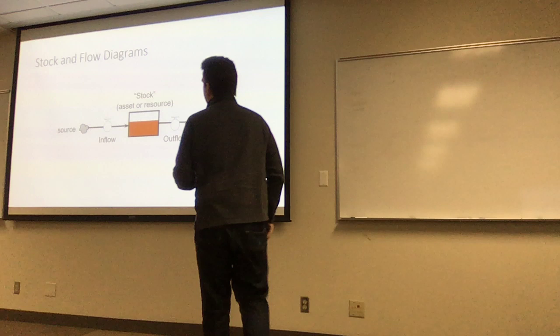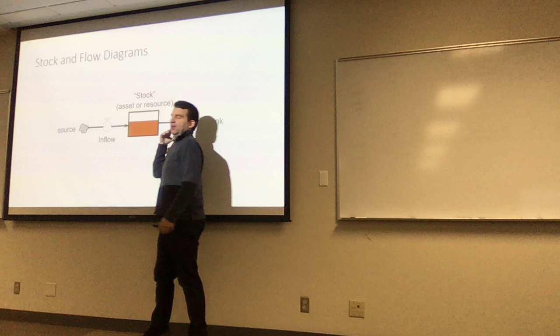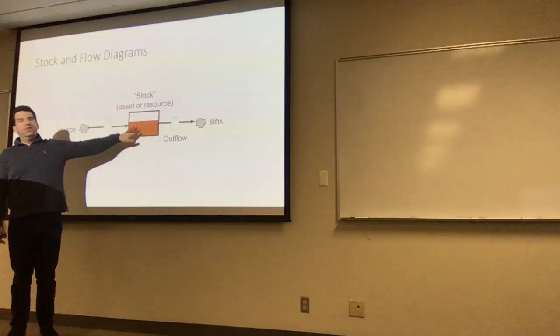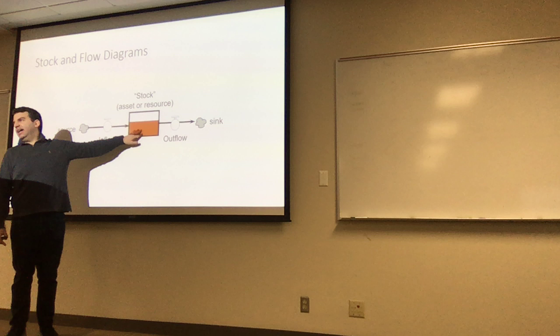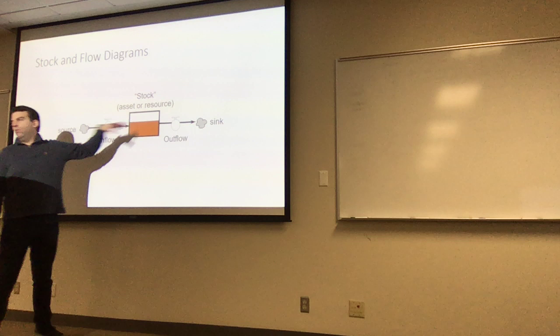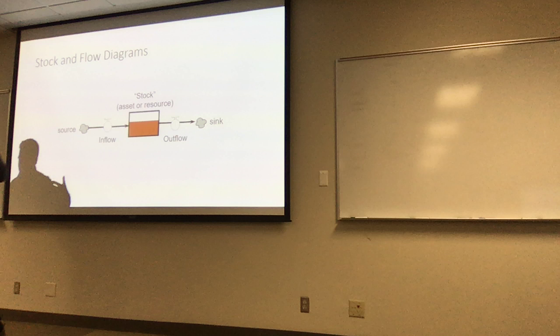So in the whole chapter they introduced stock and flow diagrams. How many people have seen stock and flow diagrams in other courses? A handful, okay. The basic idea is that we're modeling things that change over time — those things are called stocks. They have a memory; they can be at one level at one time and another level at another time. They're modeled like water in a bucket. The only way to change the level of water in a bucket is if it has a leak — an outflow — or if someone is dumping water in — an inflow.